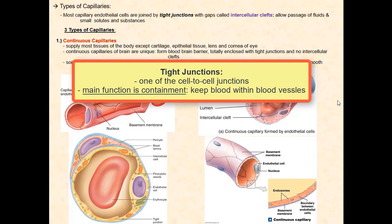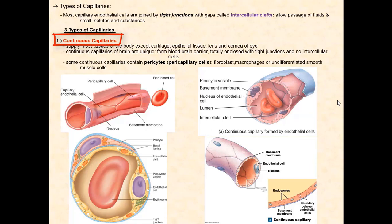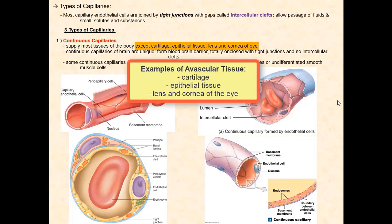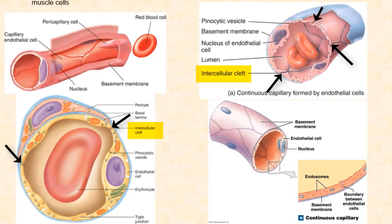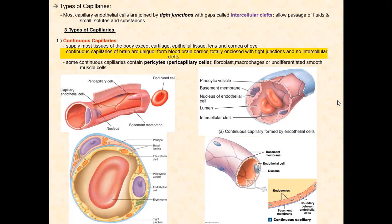Our first type of capillary is the continuous capillary. It is the most common type and supplies most tissues of the body, with the exception of avascular tissues. In addition to tight junctions between the endothelial cells, there are very small gaps or boundaries called intercellular clefts. These clefts allow for passage of fluid and small solutes, such as glucose, that can squeeze between these clefts. Larger solutes are simply too big to fit. However, when it comes to the brain, these continuous capillaries only have tight junctions, with no intercellular clefts.